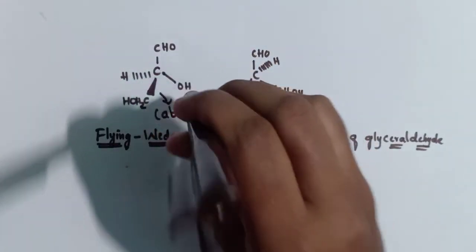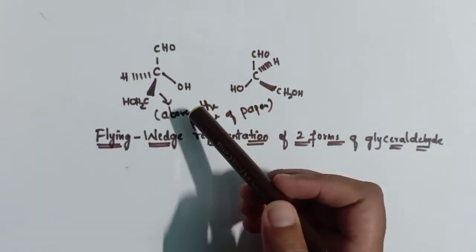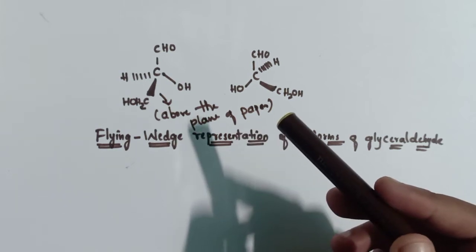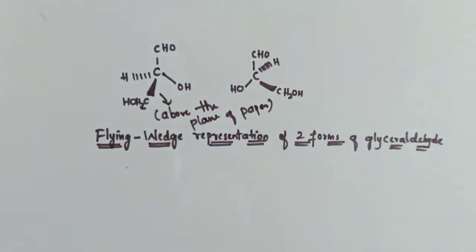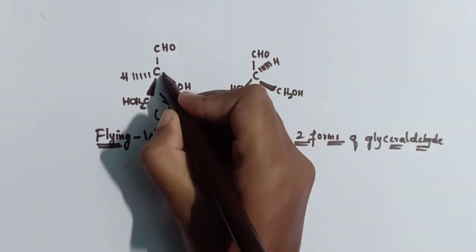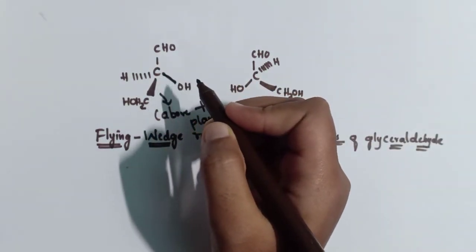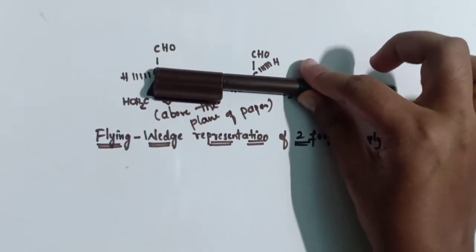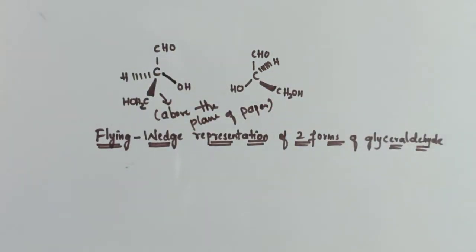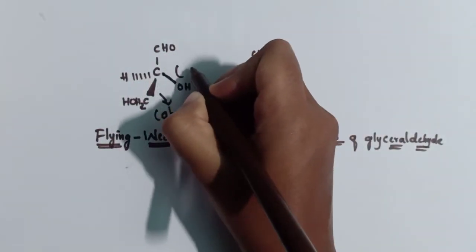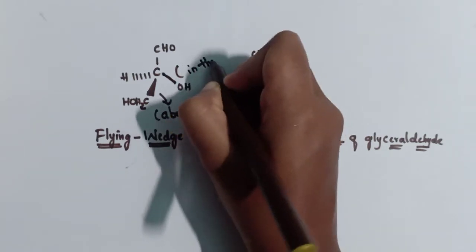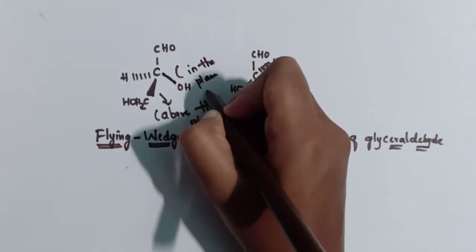The solid wedge represents a bond projecting above the plane of paper, and we can also say this bond is projecting towards the observer. The second type of line is continuous lines, also called solid lines. These are the bonds in the plane of paper — they are not projecting above or below, they lie in the plane of paper.